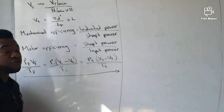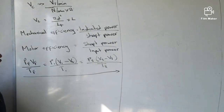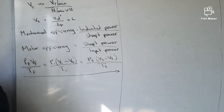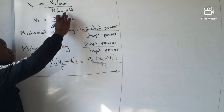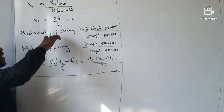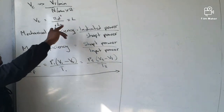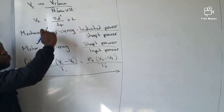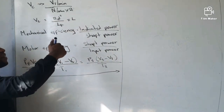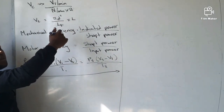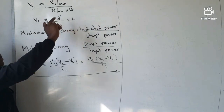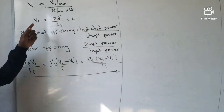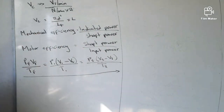We also have another formula for volumetric efficiency, which is Vt per minute divided by N per minute, multiplied by 2. Note that if it is a single acting compressor, you do not multiply by 2. If it is a double acting reciprocating compressor, then you do multiply by 2.